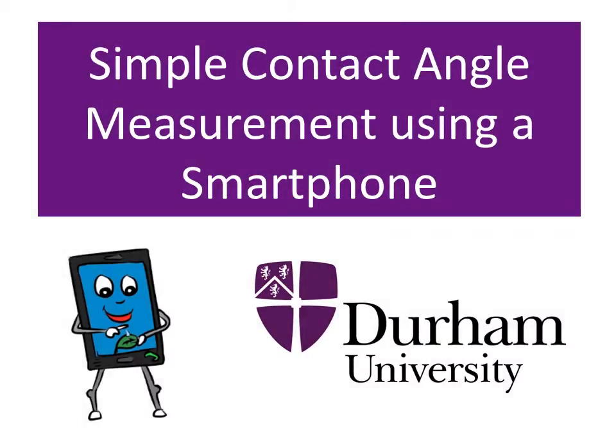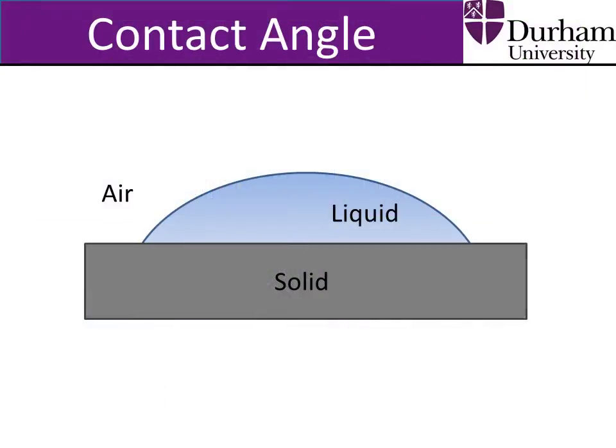This tutorial is going to show you how to use your smartphone to measure the wettability of surfaces. As explained in earlier tutorials, the contact angle of a liquid droplet on a surface is a good method of characterising the wetting properties of that surface.